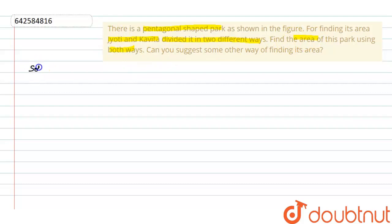Firstly, the diagram is missing in the question, so we will draw the diagram. Here is a pentagonal shaped park.